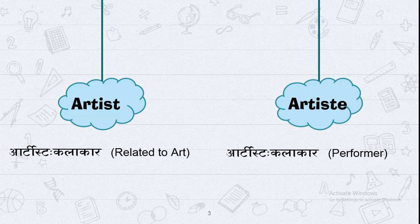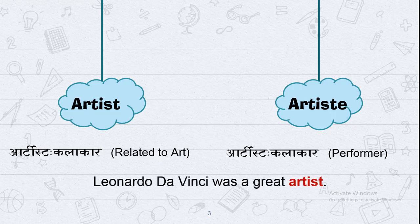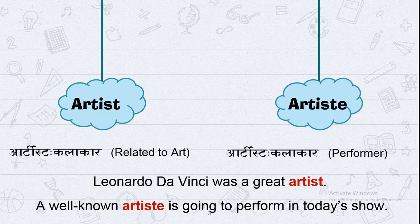The second, Artiste — A-R-T-I-S-T-E — is also Kalakar in Hindi and Gujarati, but this person is a performer: someone who performs on stage, a singer, dancer, or actor. We usually use the first spelling, A-R-T-I-S-T. Example: 'Leonardo da Vinci was a great artist' — he was a painter, so Artist is used. While: 'A well-known artiste is going to perform in today's show' — a performer is A-R-T-I-S-T-E.